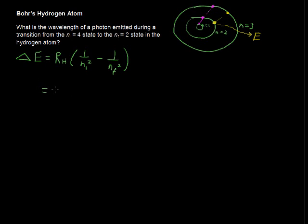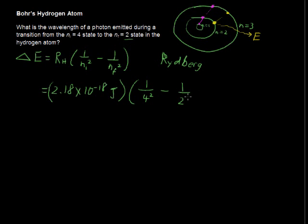So, that change in energy equals 2.18 times 10 to the negative 18th joules. That's the Rydberg constant. I'll write that down for you. Rydberg, the Rydberg constant. And that's just for hydrogen. Well, it's different for different gas atoms. Now, the initial state was 4, the orbital 4. So, 1 over 4 squared minus 1 over the final state 2, 1 over 2 squared.